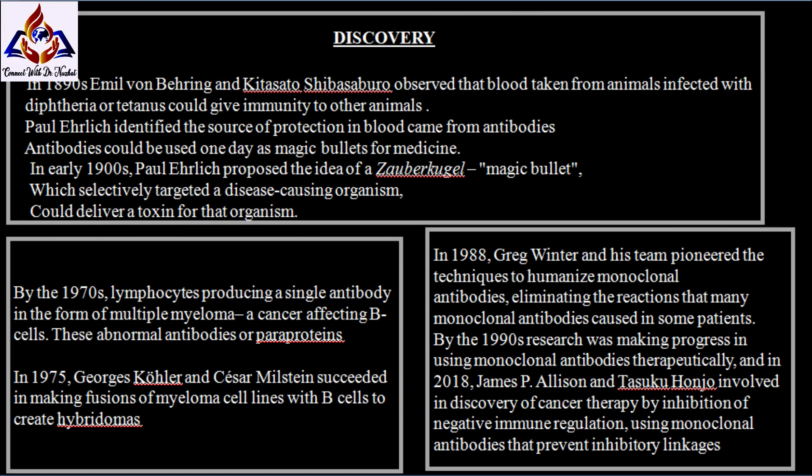In the early 1900s, immunologist Paul Ehrlich proposed the idea of a magic bullet — conceived of as a compound which selectively targeted a disease-causing organism and could deliver a toxin for that organism. This underpinned the concept of monoclonal antibodies and monoclonal drug conjugates.